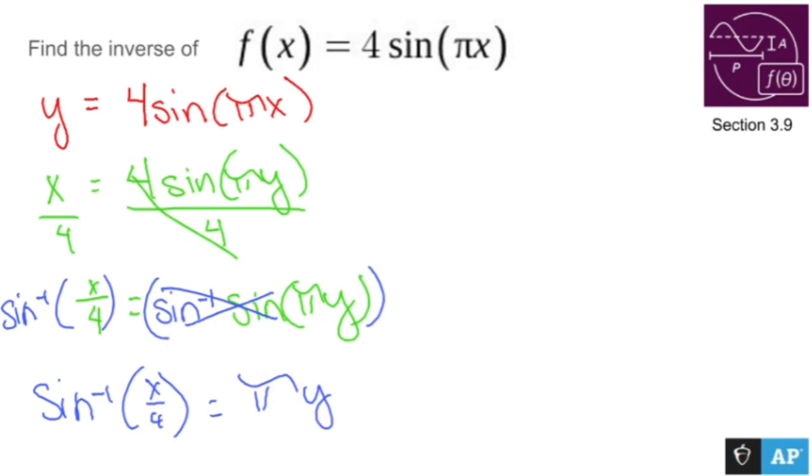To get y all by itself, let's divide everything by π, or better yet, multiply everything by 1/π. That'll make the left side look a lot more pleasant. Multiply everything by 1/π. And that leaves me with (1/π)sin^(-1)(x/4) = y.